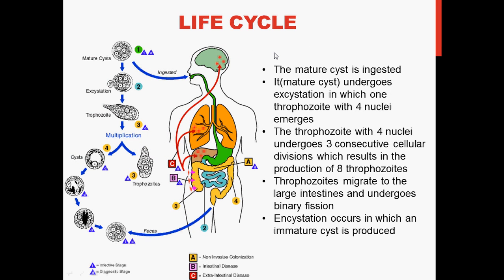Regarding the life cycle of Entamoeba histolytica: the mature cyst is ingested and undergoes excystation, meaning it exits the cyst stage, in which one trophozoite with four nuclei emerges. The trophozoite with four nuclei then undergoes three consecutive cellular divisions, resulting in the production of eight trophozoites. These trophozoites then migrate to the large intestines and undergo binary fission. Encystation then occurs, in which an immature cyst is produced.